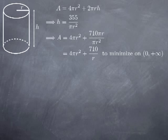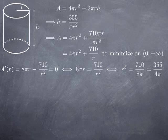To find the minimum we study the derivative and look for critical values. The derivative of 4πr² is 8πr, and the derivative of 710/r is −710/r², since 1/r = r⁻¹ differentiates to −r⁻². Setting A'(r) = 0 gives 8πr = 710/r². Multiplying both sides by r², we get r³ = 710/(8π), or equivalently r³ = 355/(4π).